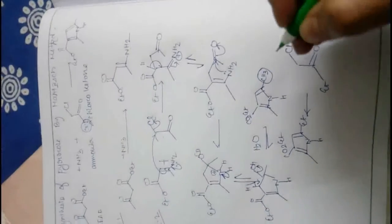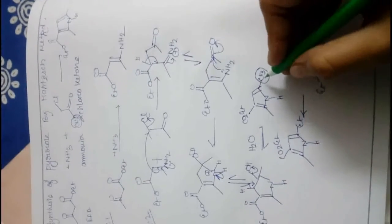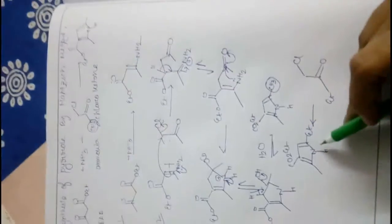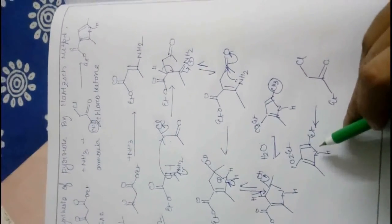The ultimate product of Hans pyrrole synthesis is this. Now, the conclusion is that this CHO group comes from this CHO group. If we want to form this product, then we will use this starting material.